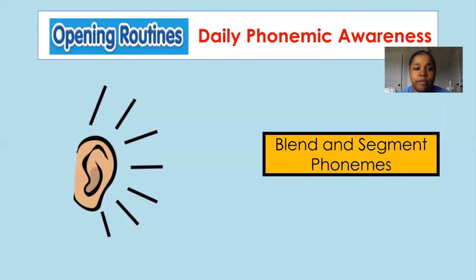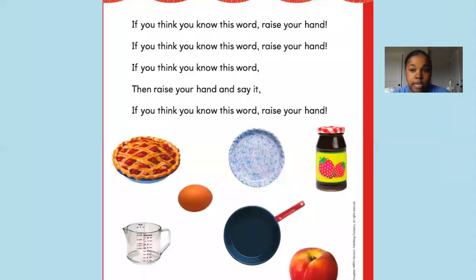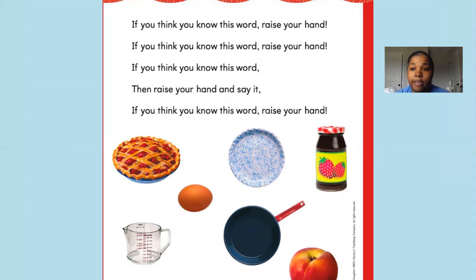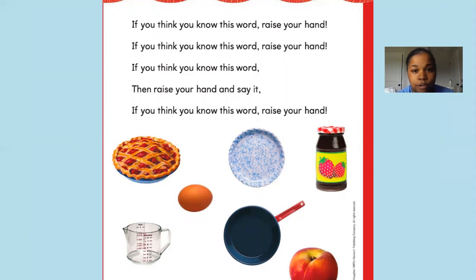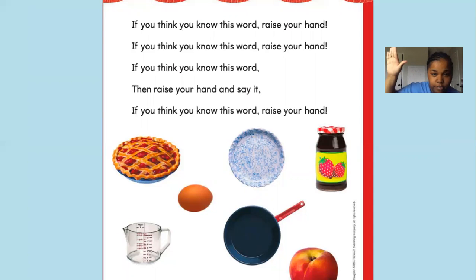Okay, we're going to blend and segment phonemes. That means with your ear — you need to listen for the sound. We have a little song, and it goes to the tune of 'If You're Happy and You Know It, Clap Your Hands.' You see the pictures at the bottom, and that's what we're going to blend and make the sound. If you know the word after we review the sounds, the song says raise your hand. If you think you know this word, raise your hand and say it.